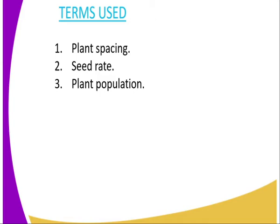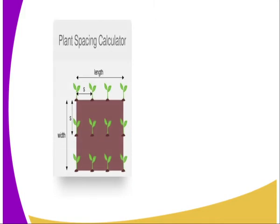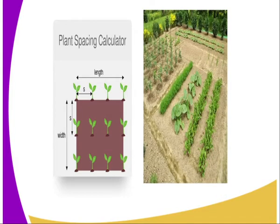The third term is plant population, and it refers to the number of plants that are grown in the field. Regarding plant spacing, as you can see on the diagram, there is the length, which is represented by letter S in a horizontal direction, and the row is represented by the term width.